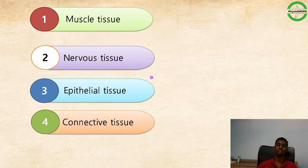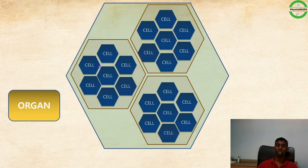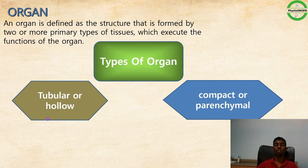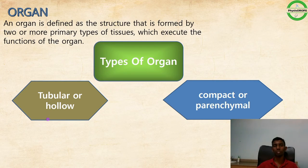Moving up from tissue, the next level is the organ. One or more primary tissues working together for the same function form an organ. An organ is a structure formed by two or more primary types of tissues — muscular, epithelial, nervous, and connective tissue — working together.